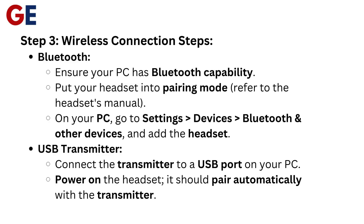Step 3: Wireless connection steps. For Bluetooth, ensure your PC has Bluetooth capability and put your headset into pairing mode — refer to the headset's manual. On your PC, go to Settings, then Devices, then Bluetooth and other devices, and add the headset.